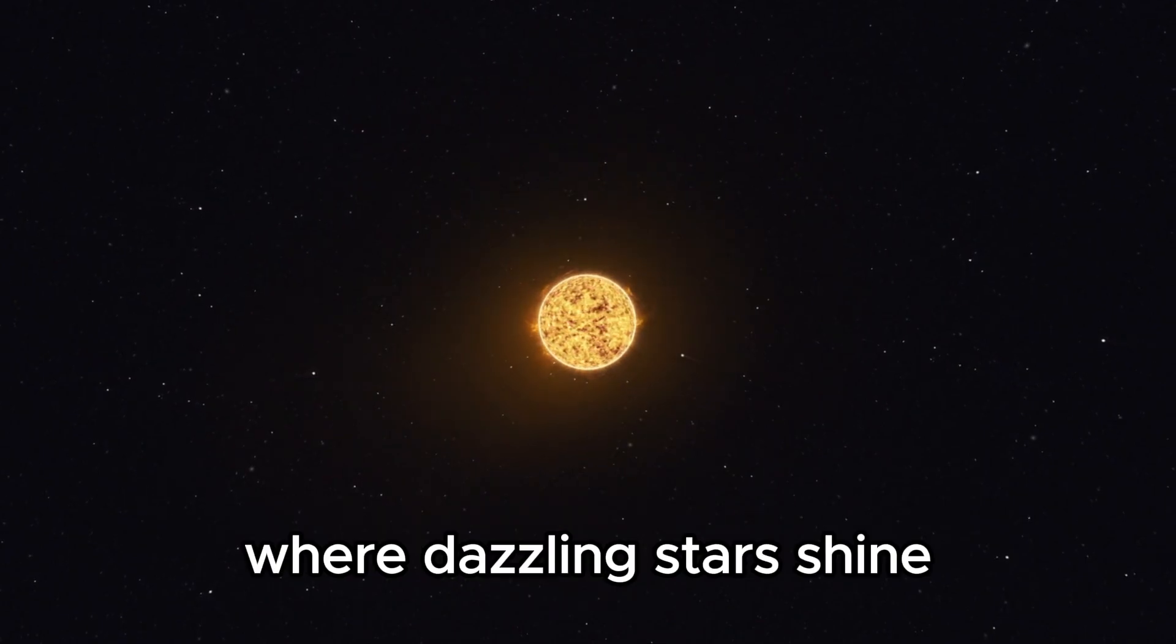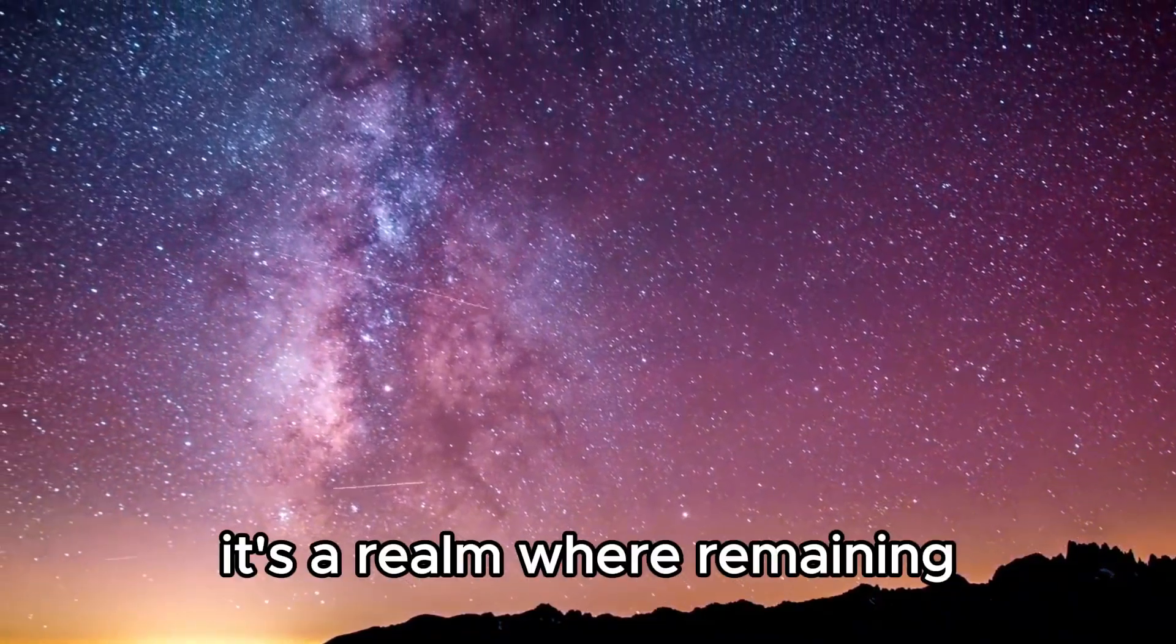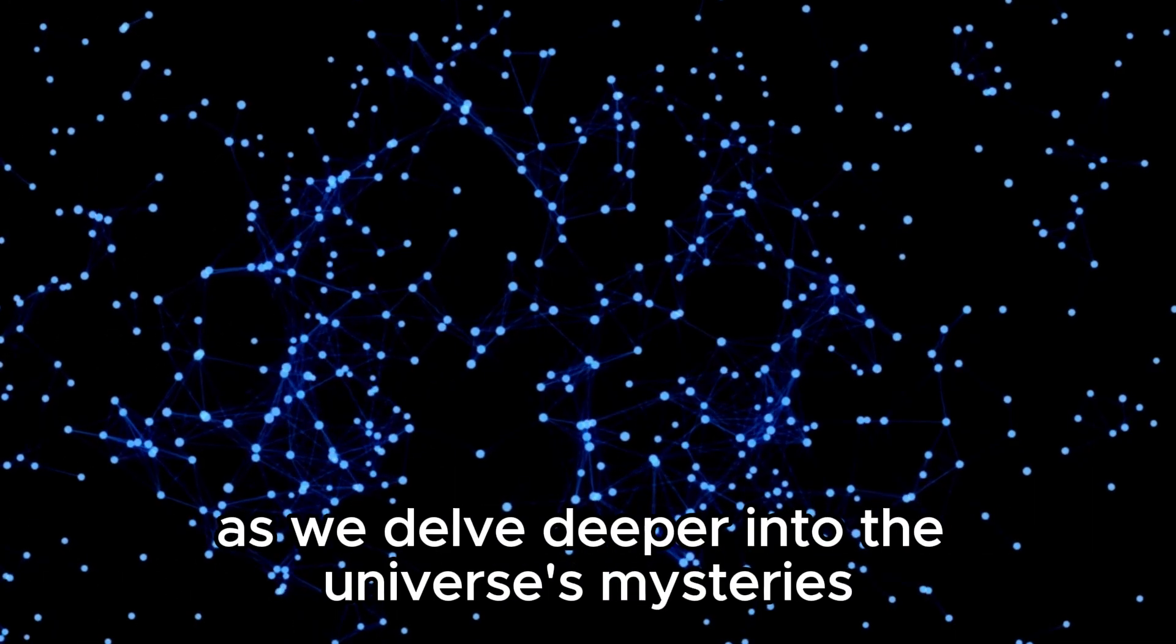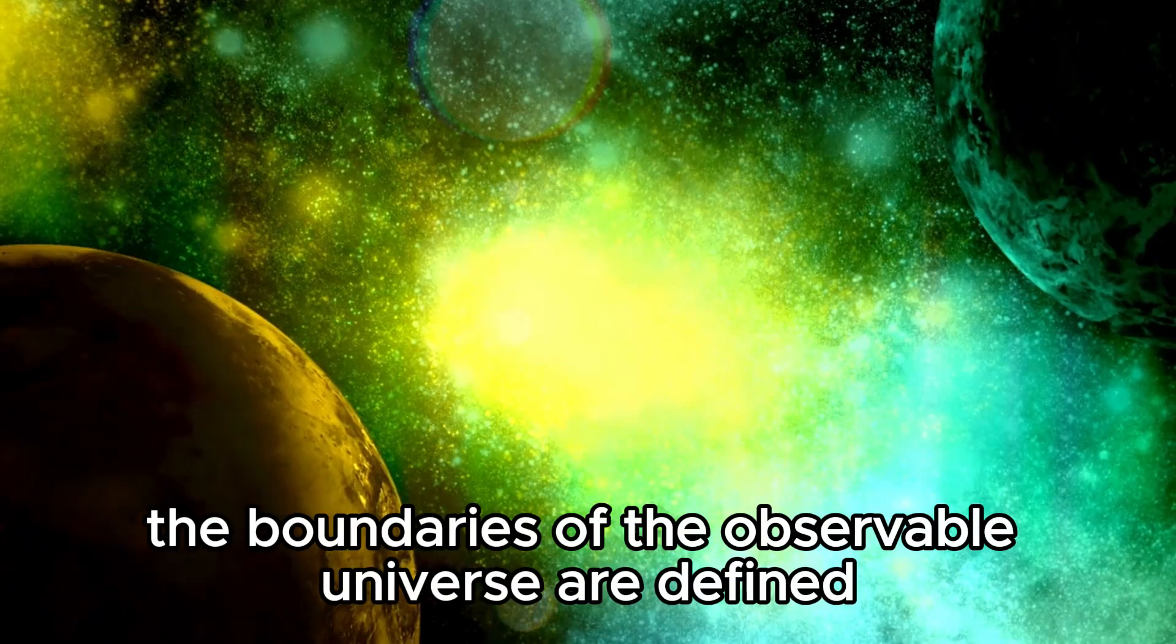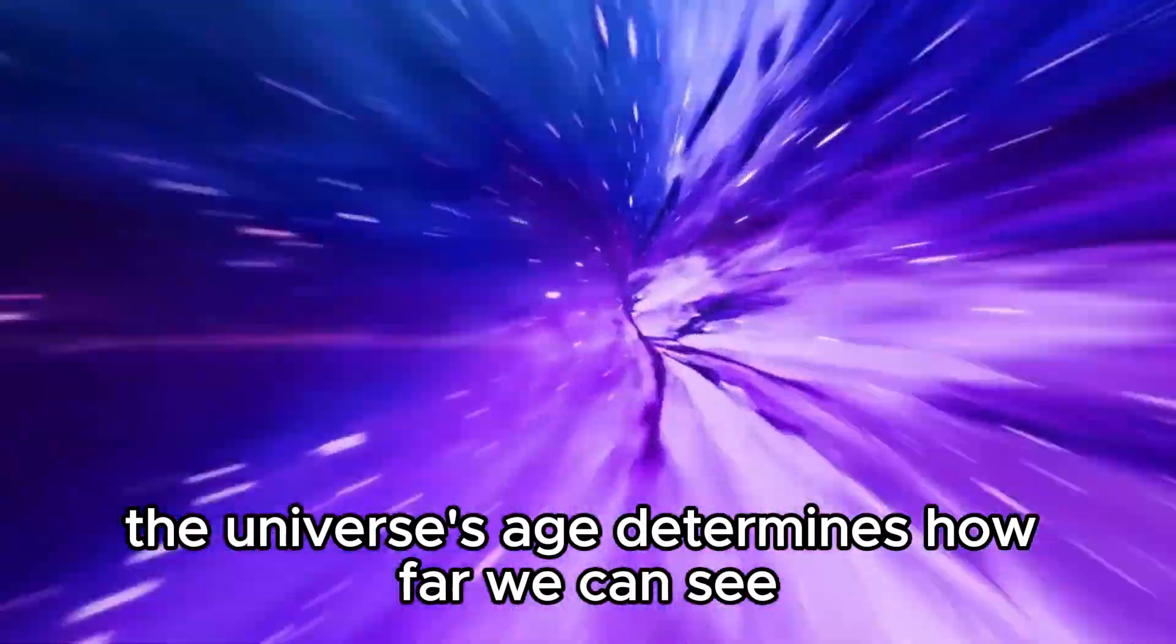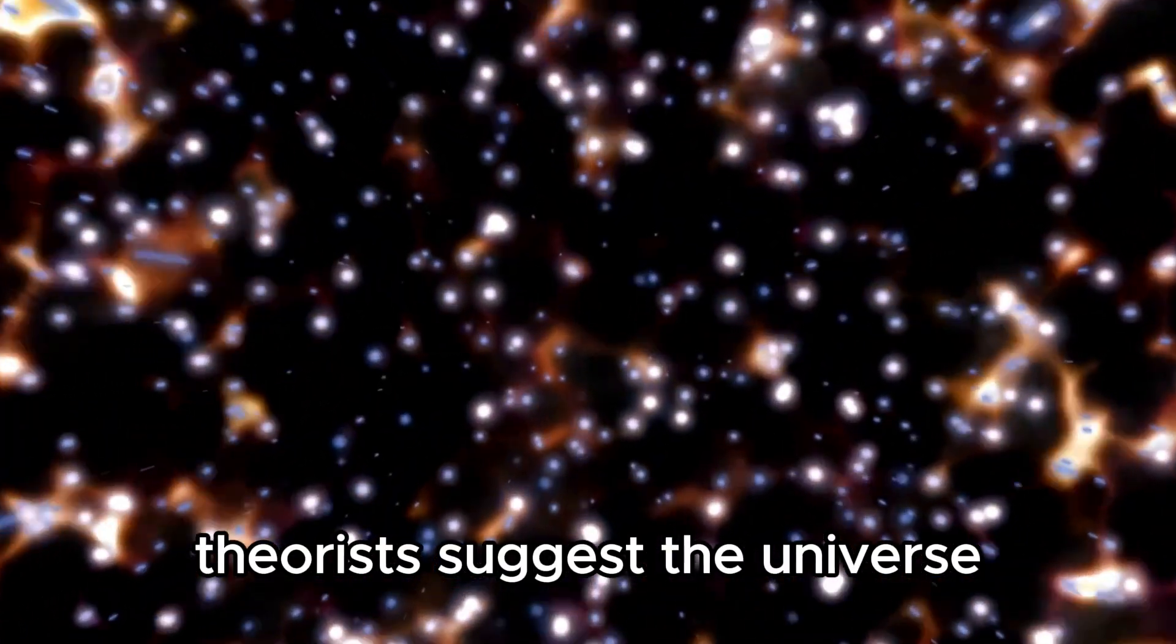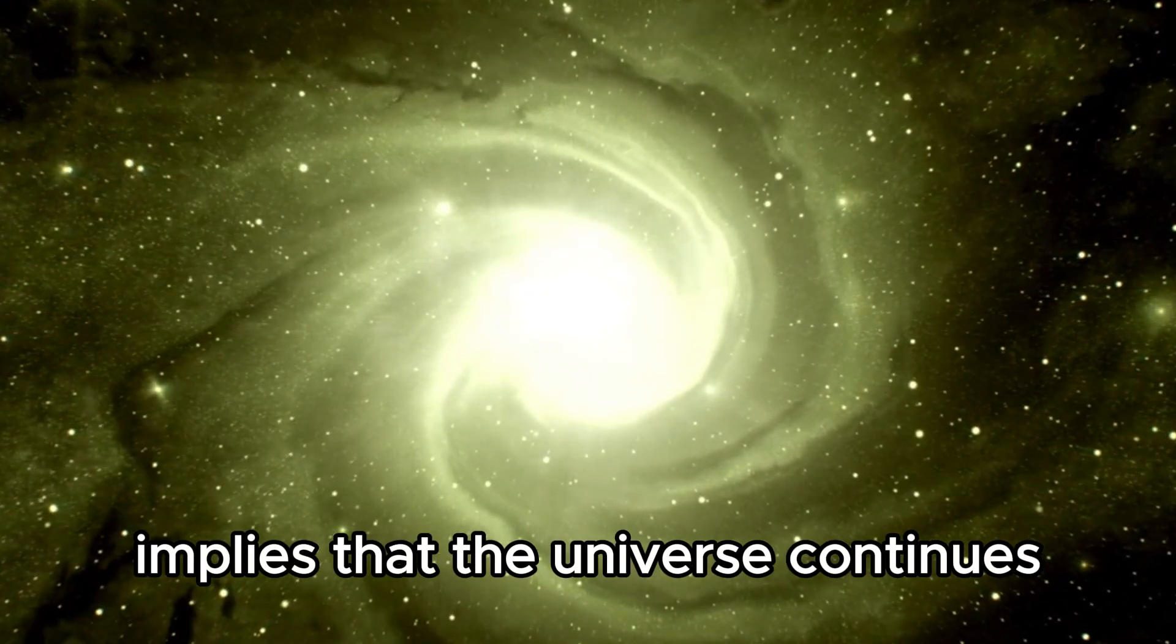Consider the universe to be a vast theater where dazzling stars shine, galaxies revolve, and mysteries hide. This vast expanse is known as the observable universe. It's a realm where remaining unseen areas remain hidden in darkness. The boundaries of the observable universe are defined not by physical barriers but by the limitations of our observations. The universe's age determines how far we can see. Since the universe is approximately 13.8 billion years old, the farthest we can observe is the light that has traveled to us over that period.